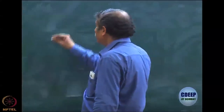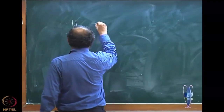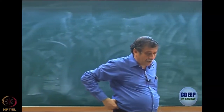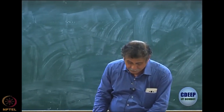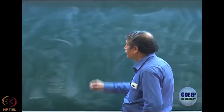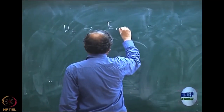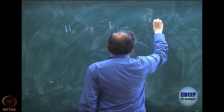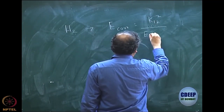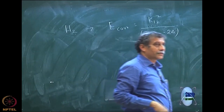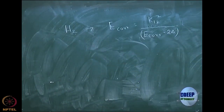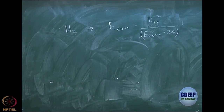Let us continue with the double CI. Yesterday we did this for the monomer hydrogen molecule. I hope you remember that we derived the form for E correlation. We had E correlation equal to k₁₂ squared, and E correlation minus 2δ. If you solve this equation, it is a quadratic equation.